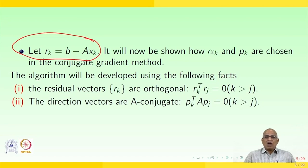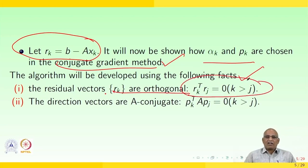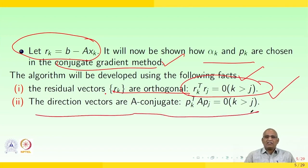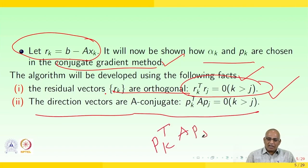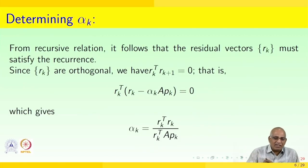It will now be shown how α_k and p_k are chosen in the conjugate gradient method. The algorithm is developed using the following facts. First, the residual vectors r_k are orthogonal — that is, r_kᵀ r_j = 0 for k > j. Second, the direction vectors are A-conjugate — that is, p_kᵀ A p_j = 0 for k > j. From these conditions, we can determine α_k.